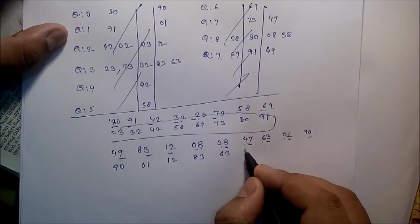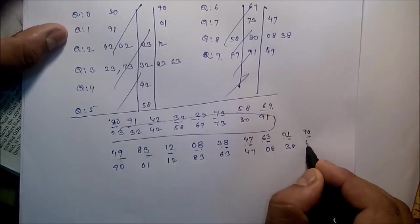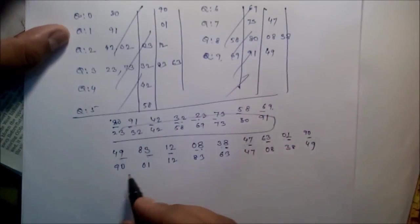Now copy the data: 90, 01, 12, 90 should be here. Then 12, 83, 83, 83, 63, 47, 08, 38, and 49.